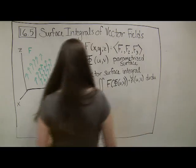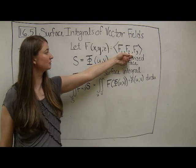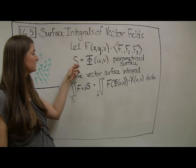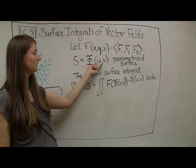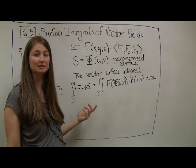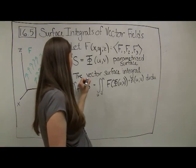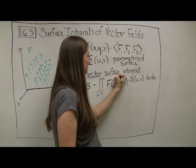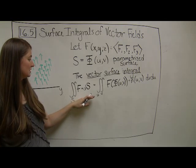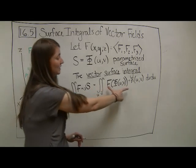Let's jump right in with our definition. Let f of x, y, z be a vector field with a three-component output in R3, and let our surface S be parametrized by capital phi of u, v. This parametrized surface is going to be just like the surface parametrizations that we saw in 16.4. Then we have a definition here: the vector surface integral, as opposed to what we saw previously where our functions were not vector-valued. This notation is a generic way of writing a vector surface integral, and this is how we compute it.